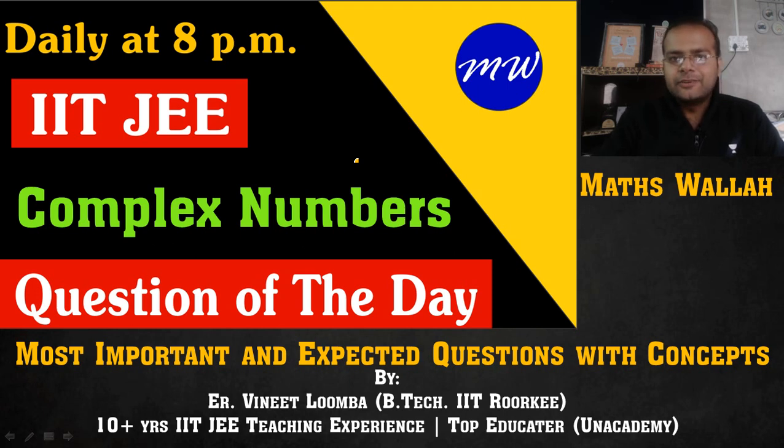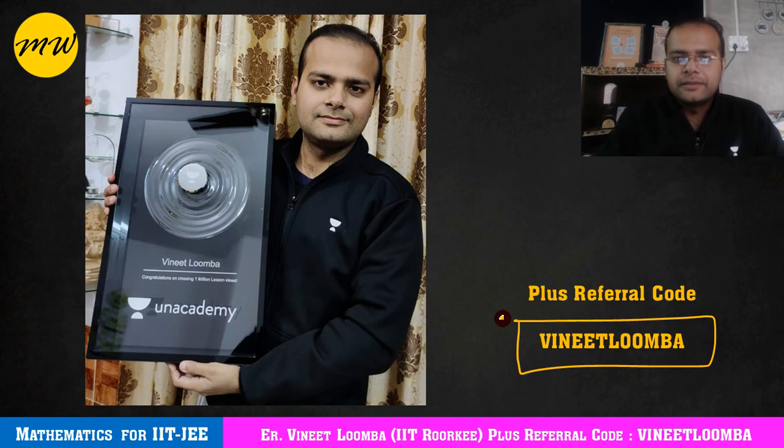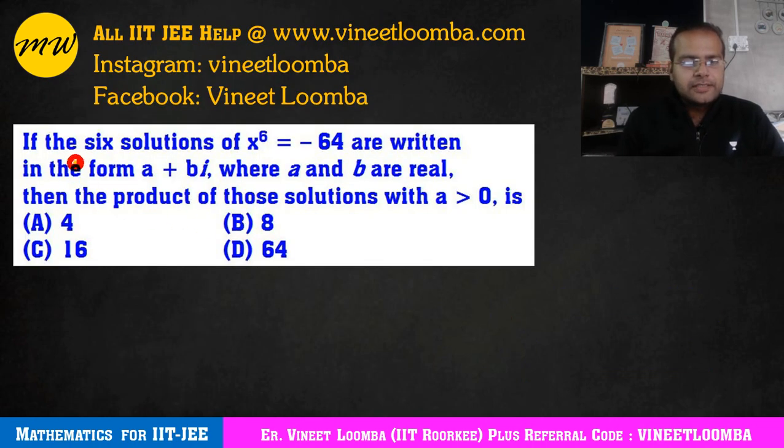So let's directly go into the question. If you want to subscribe Unacademy Plus, don't forget to use my referral code Vinit Lumba there. Alright, so question is if the six solutions of x raised to the power 6 is equal to minus 64 are written in the form a plus bi where a and b are real, then the product of these solutions with a greater than 0 is 4 options.